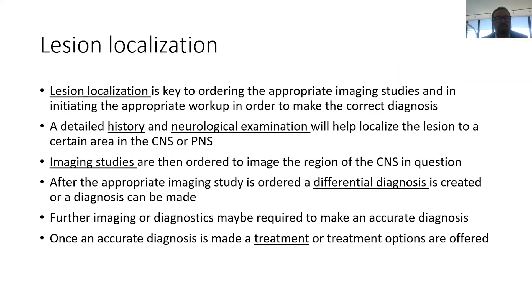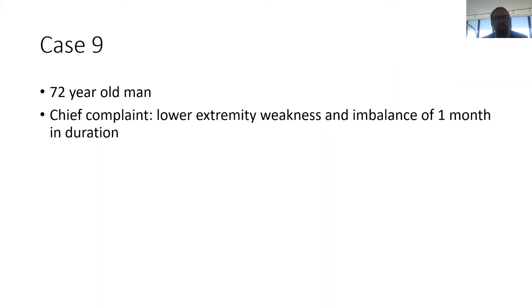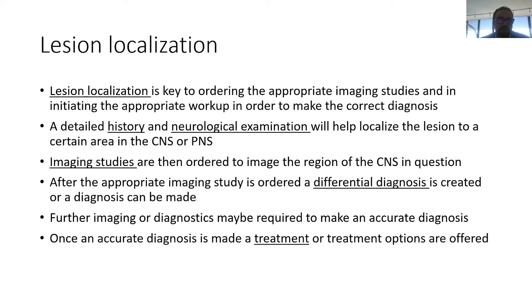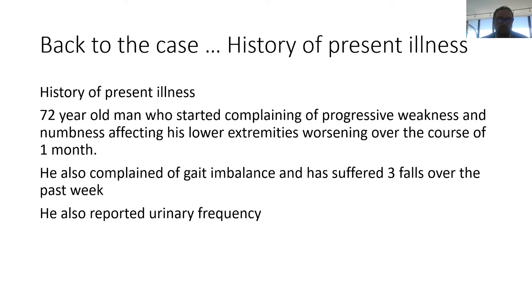This is a 72-year-old gentleman who came in with lower extremity weakness and imbalance of one month. Neurology and neurosurgery is about lesion localization — we start with the history and physical exam, which leads us to the appropriate imaging and generates a differential diagnosis. He came in with imbalance, urinary frequency, and weakness of the lower extremities of one month duration.